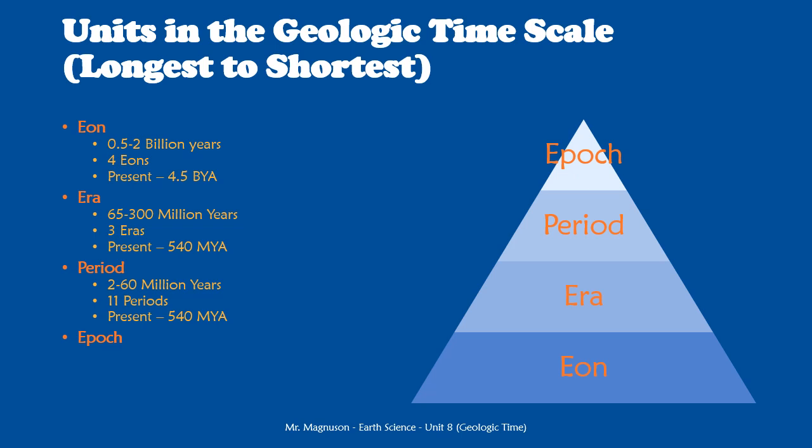The next unit is the epoch — the smallest unit we will discuss in depth. Epochs are only tens of thousands to a few million years long; they vary greatly in length but are much, much shorter than periods. There are seven epochs in the entire geologic timescale, and they start even more recently than periods and eras — only about 65 million years ago. Around the time the dinosaurs went extinct is when scientists first started dividing time into these smaller units, because the closer we get to the present in the geologic record, the more evidence there is and the more precisely we can determine what happened.